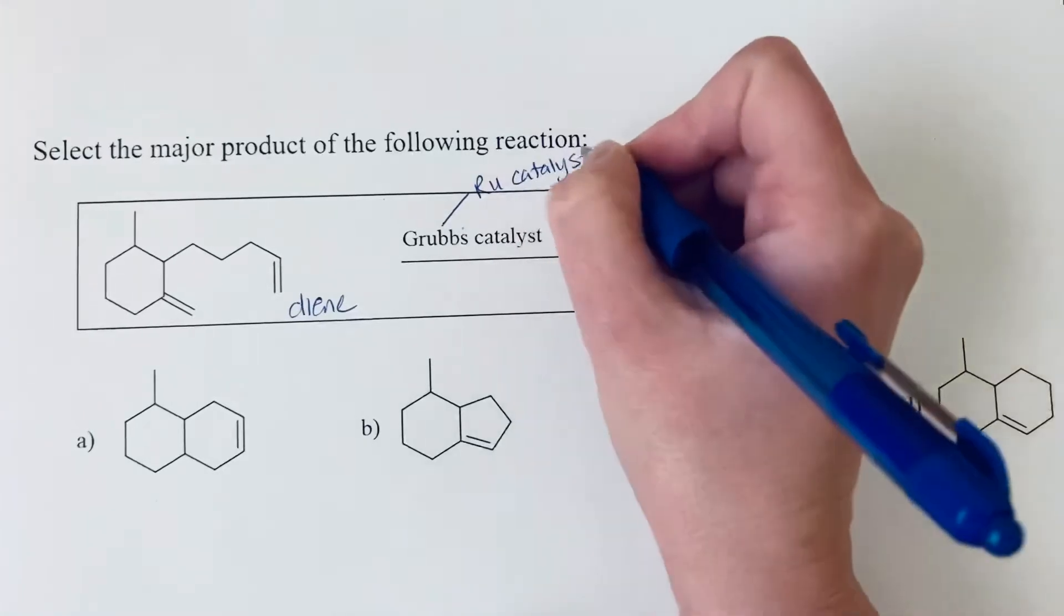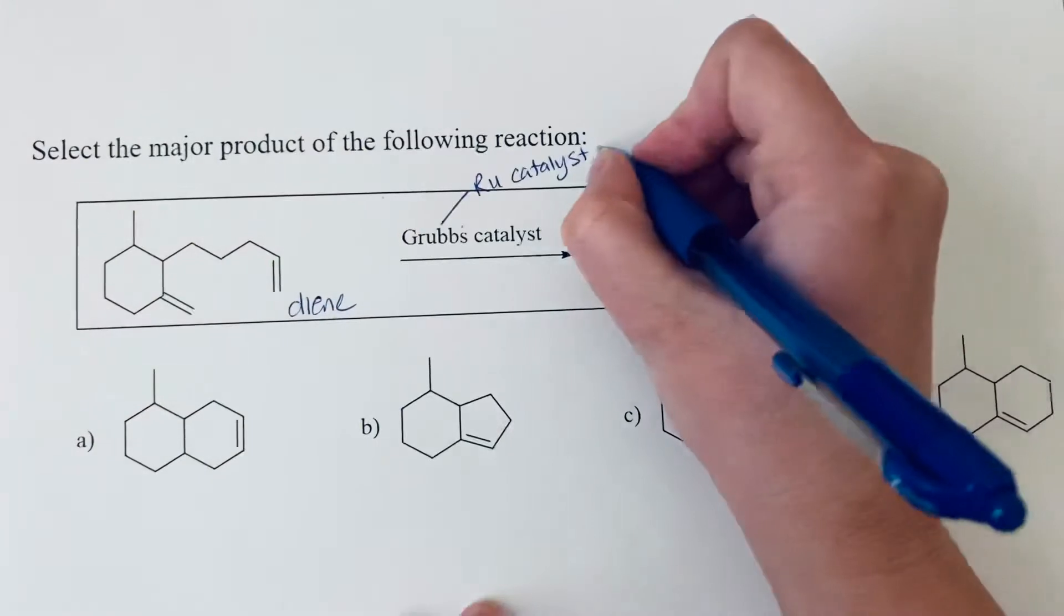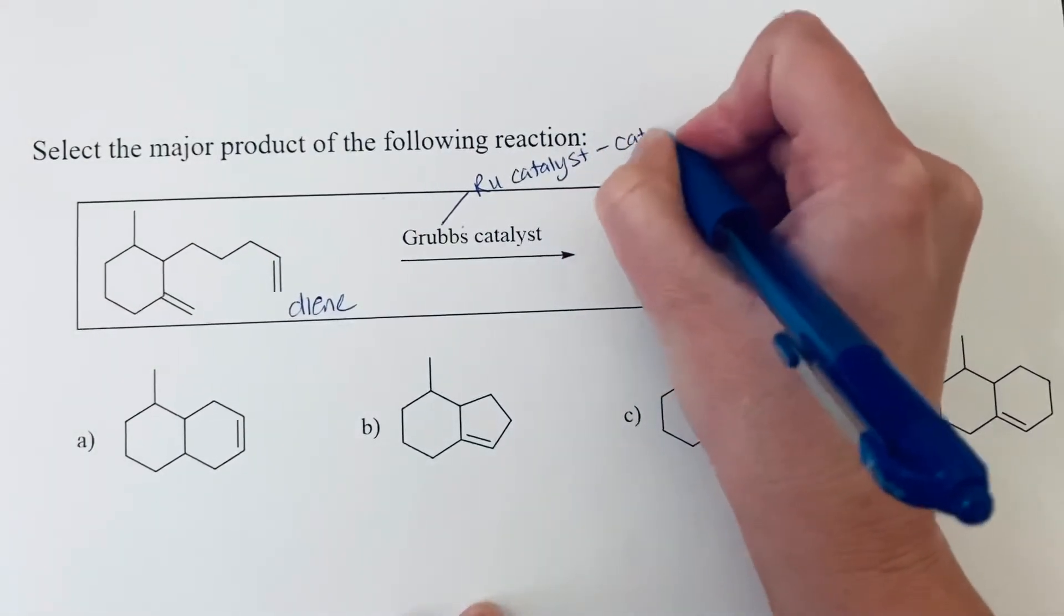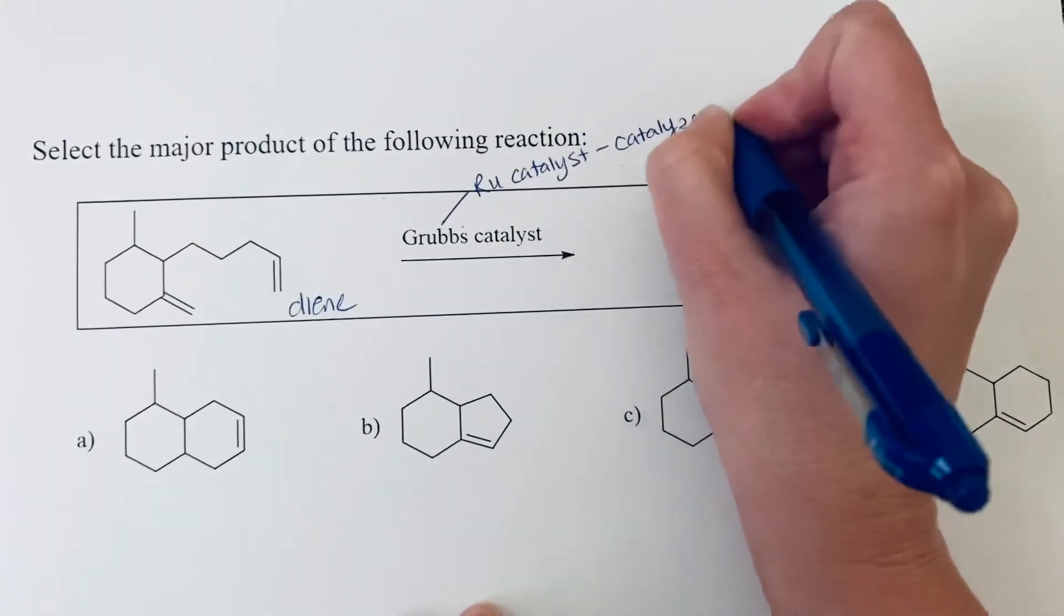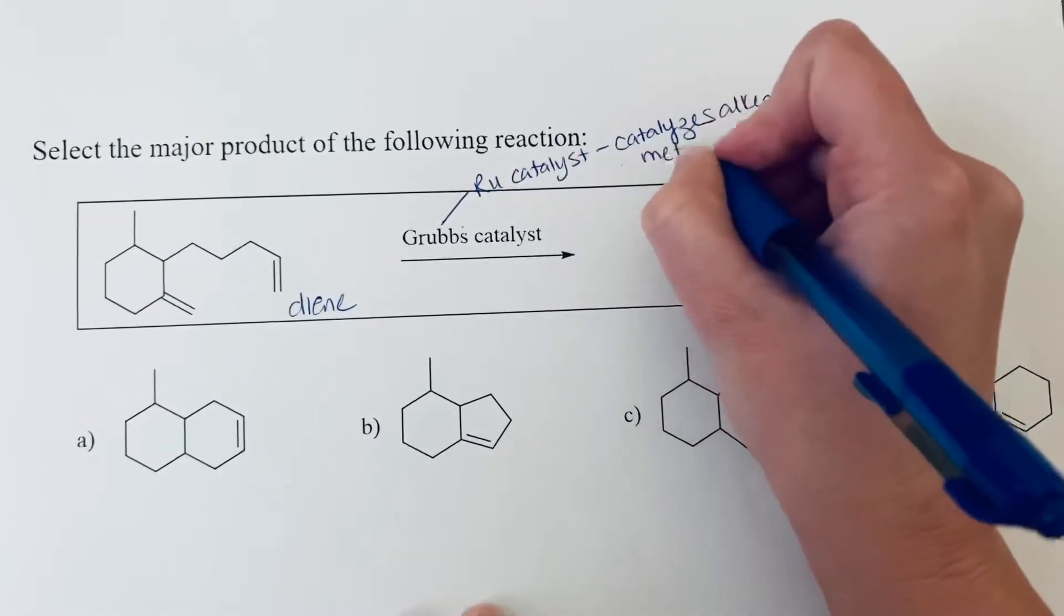So this is a ruthenium catalyst. And what we need to know is that the reaction this catalyzes is known as a metathesis reaction. So this catalyzes an alkene metathesis reaction.